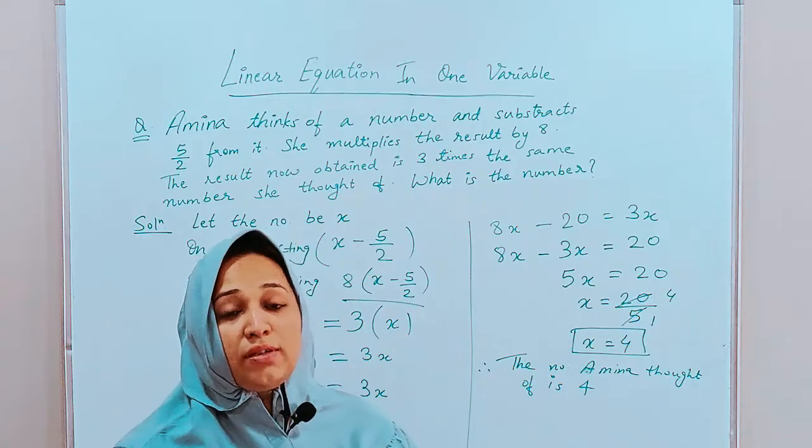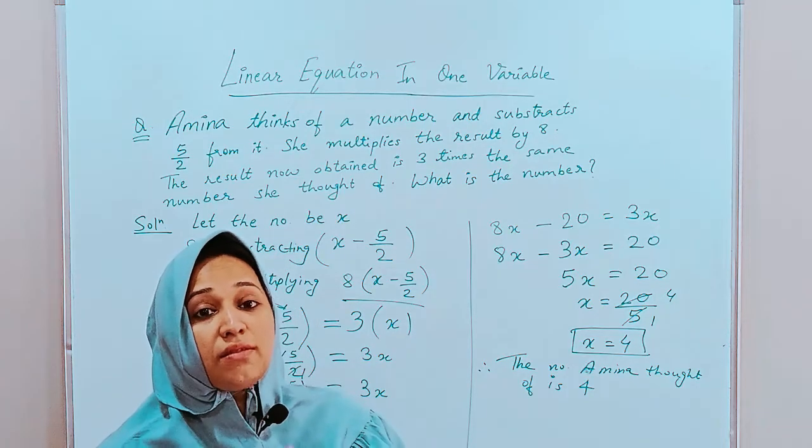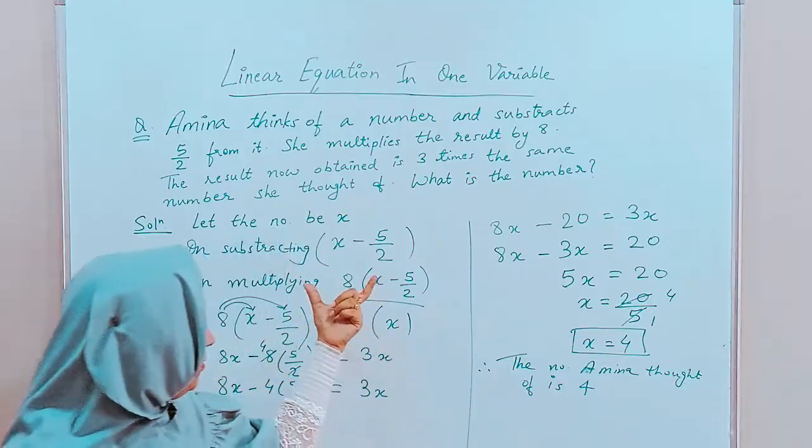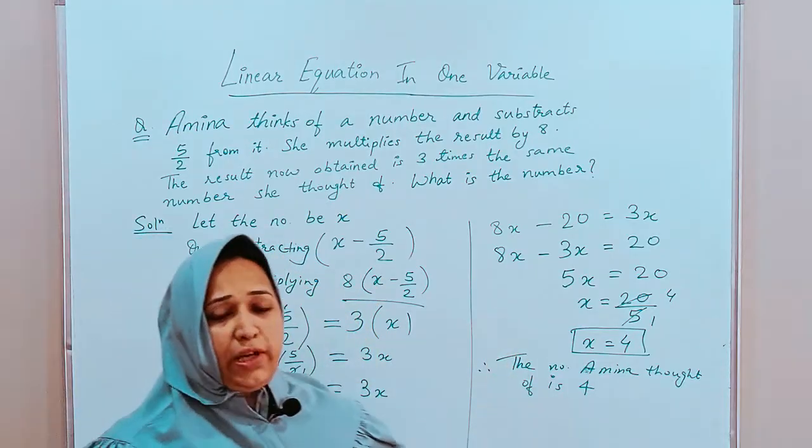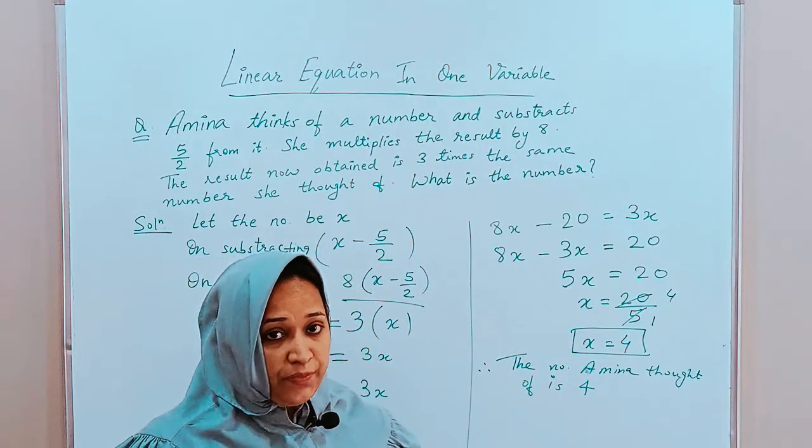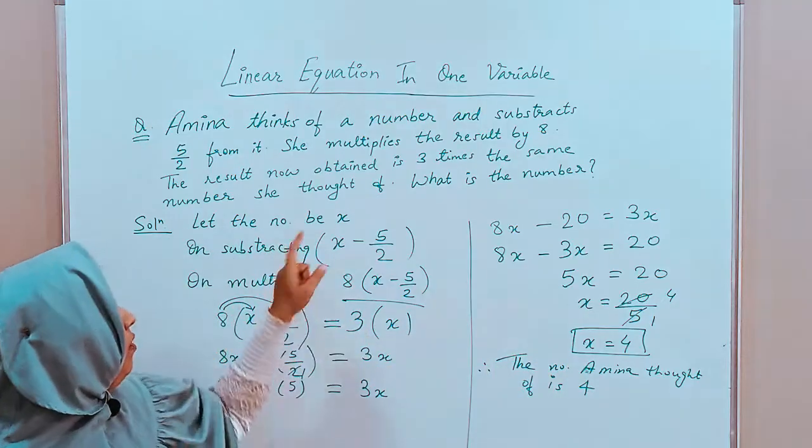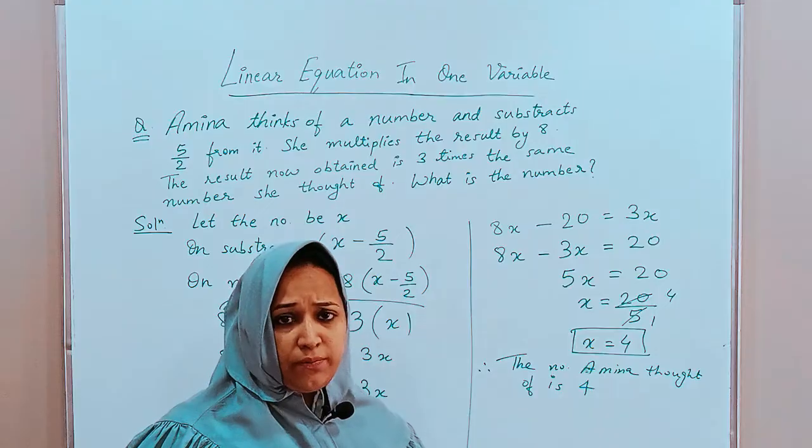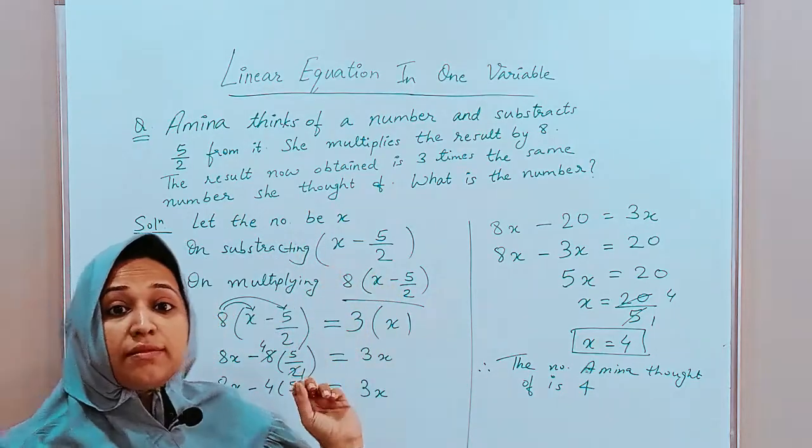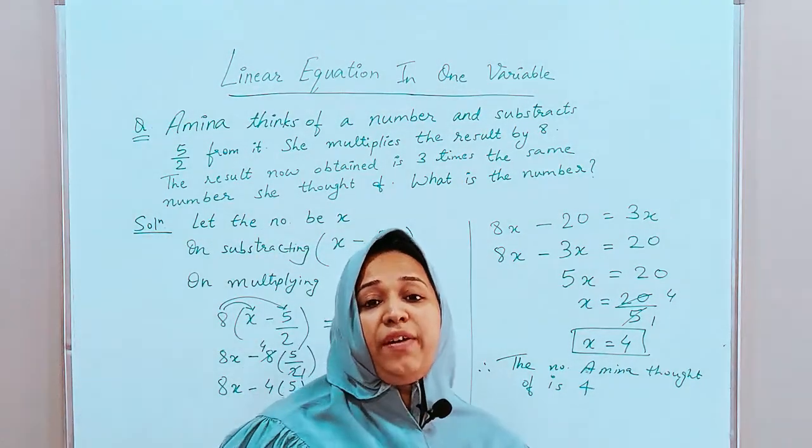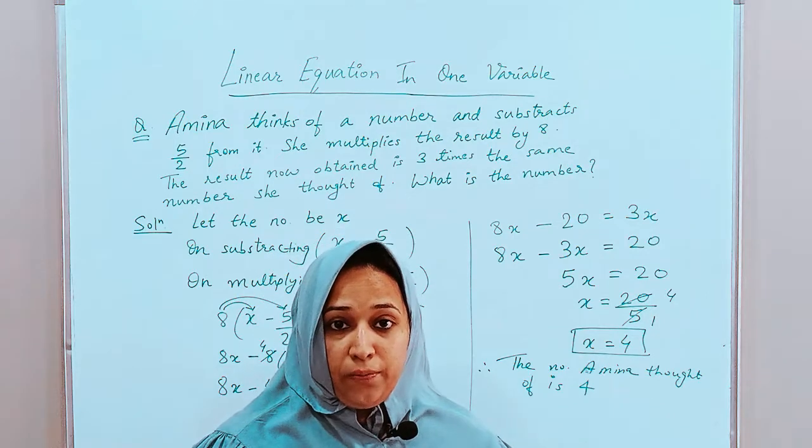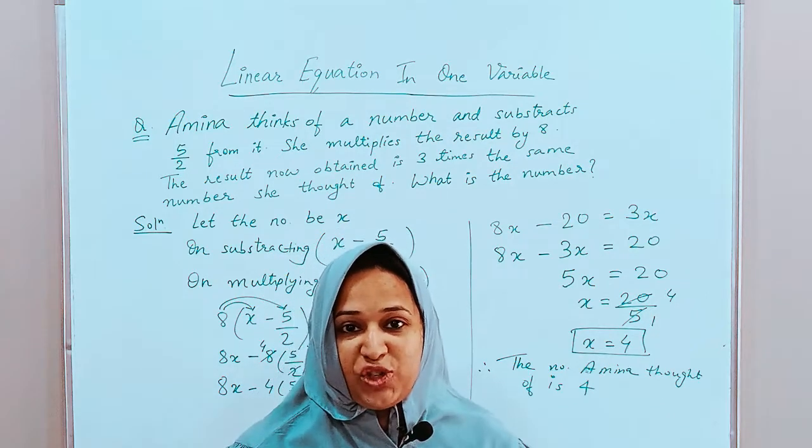This is how a word problem is solved. You have to read the questions as many times unless it is clear to you. After the concept is clear, try making the equation and then solve it for the value of the given variable. Variable can be any variable. It can be x, it can be a, b, c, d. Any alphabet is okay. I hope this is clear to you all. If you have any queries, any doubts, kindly type in the comment below. Thank you very much.